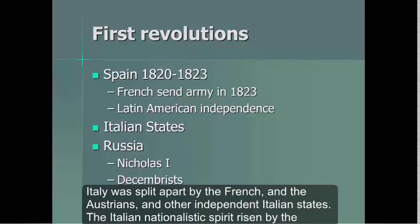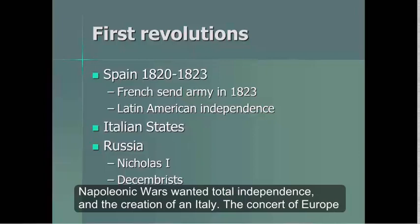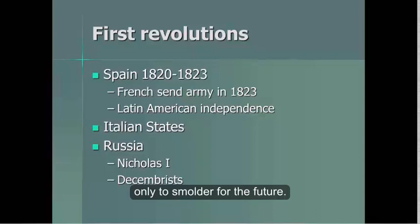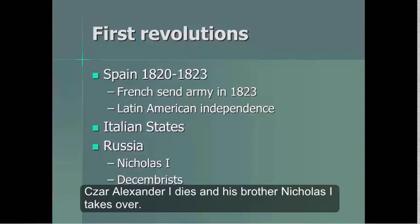The Italian states also started to rise up in 1821. Italy was split apart by the French, the Austrians, and other independent Italian states. The Italian nationalistic spirit, arisen by the Napoleonic Wars, wanted total independence and the creation of a unified Italy. The Concert of Europe was too strong, and these rebellions were put down, only to smolder for the future.